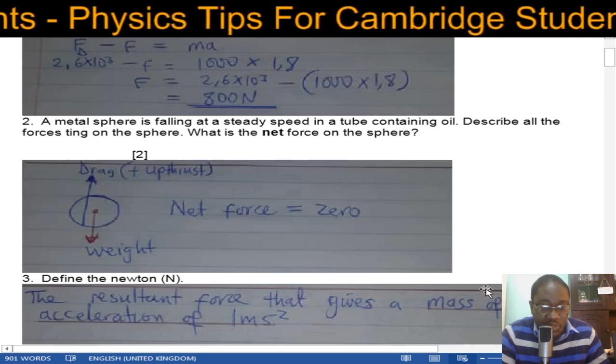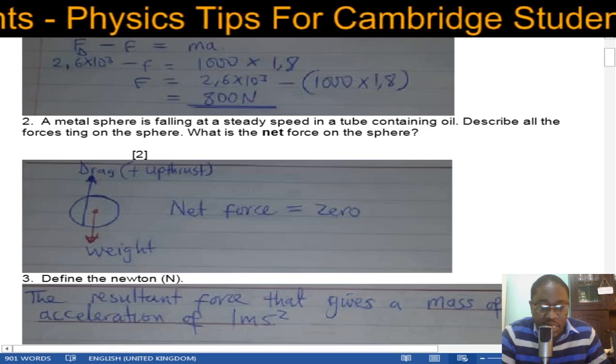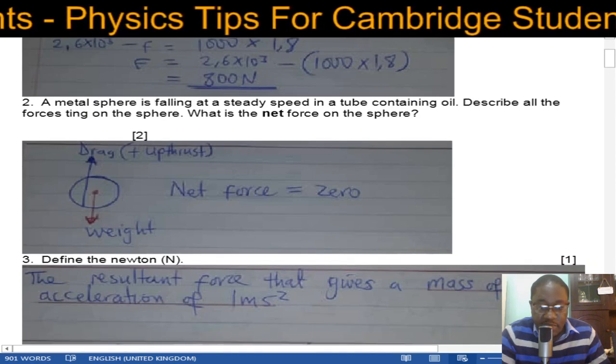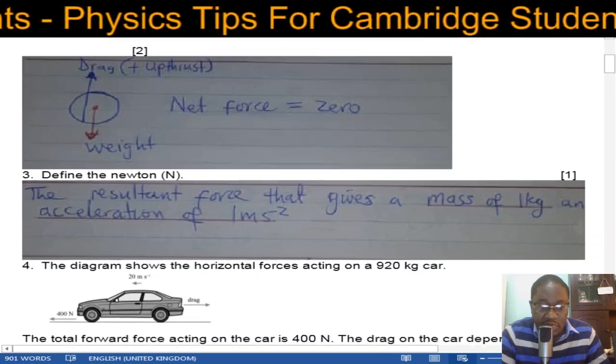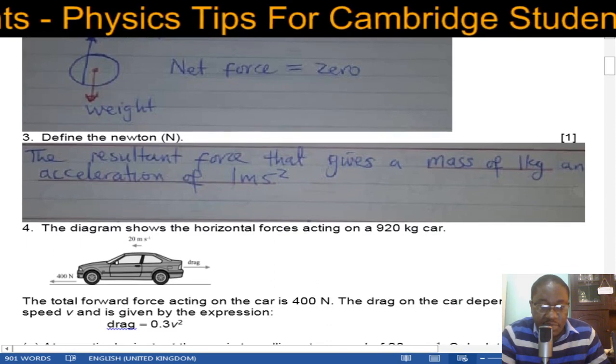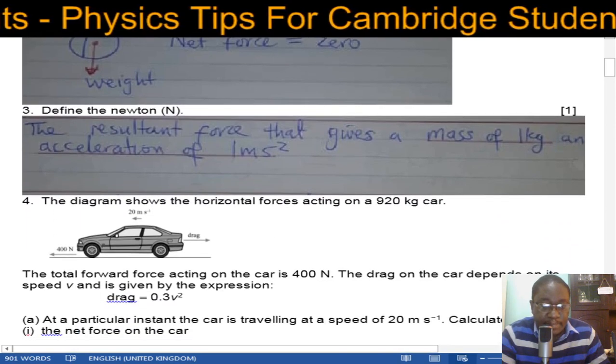Number three: define the newton. The newton is the resultant force that gives a mass of 1 kg an acceleration of 1 meter per second squared.